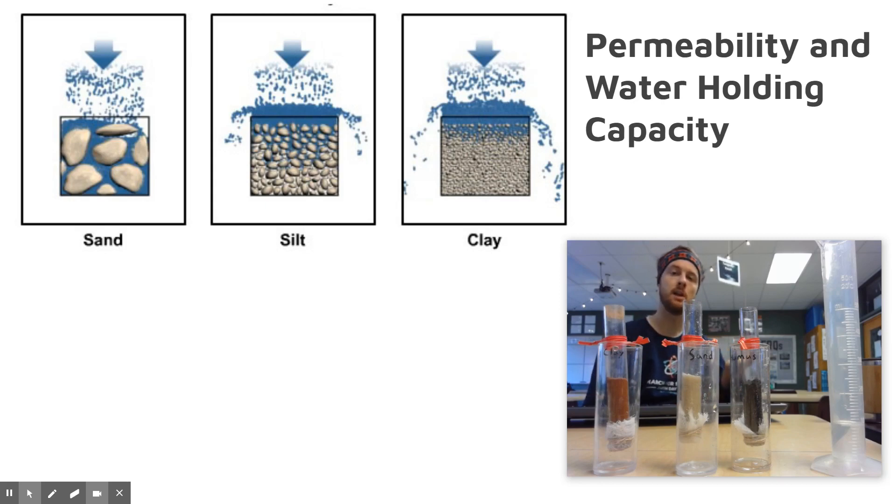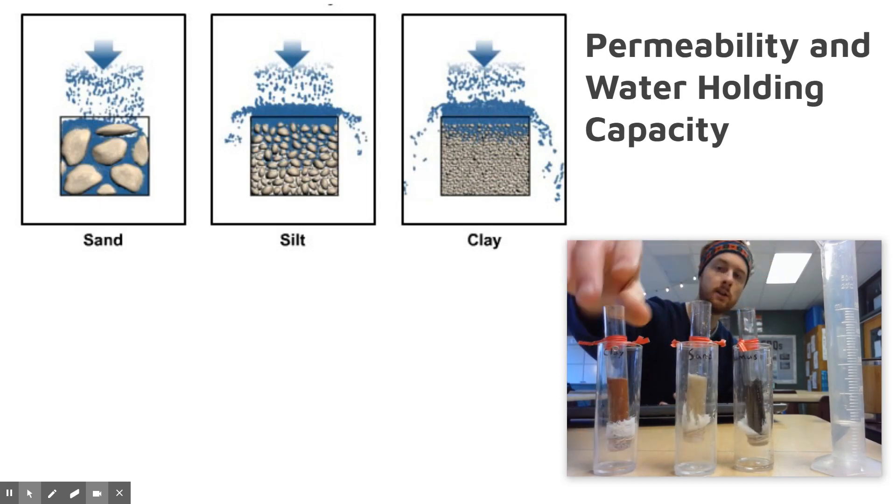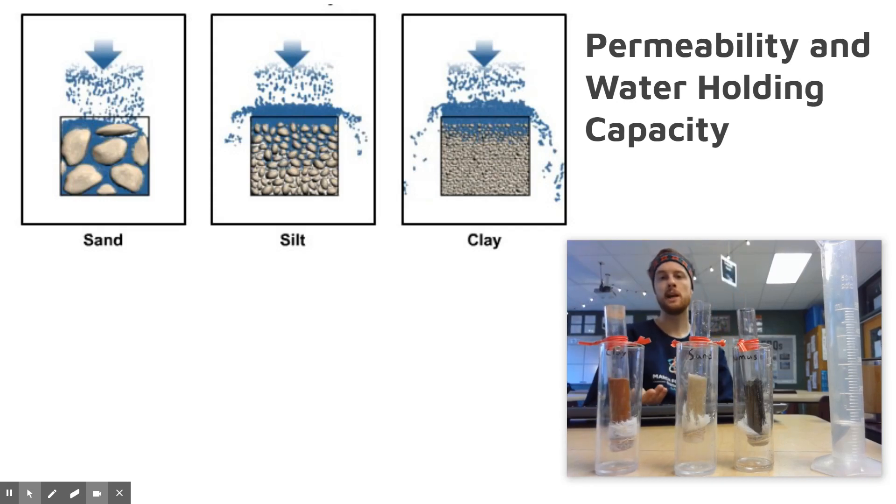You would want to have the mass of your column beforehand. You could take the dry mass of your sand and your humus and your clay beforehand. Then after saturating it and letting it sit for a predetermined amount of time, you would take the mass after the fact. The difference there is going to help you understand how much of that water volume was retained by the column.